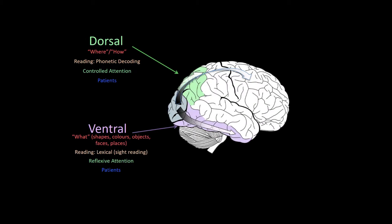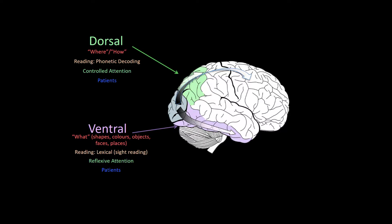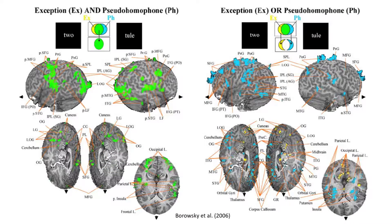We're also very interested in reading processes and how the dorsal stream represents analytical phonetic decoding, whereas the ventral stream represents holistic or lexical reading. We see this distinction when we ask fMRI participants to either phonetically decode pseudohomophones — which are non-words that sound like words, shown on the right in blue — or holistically read exception words, which are words that can't be phonetically decoded, shown in yellow.